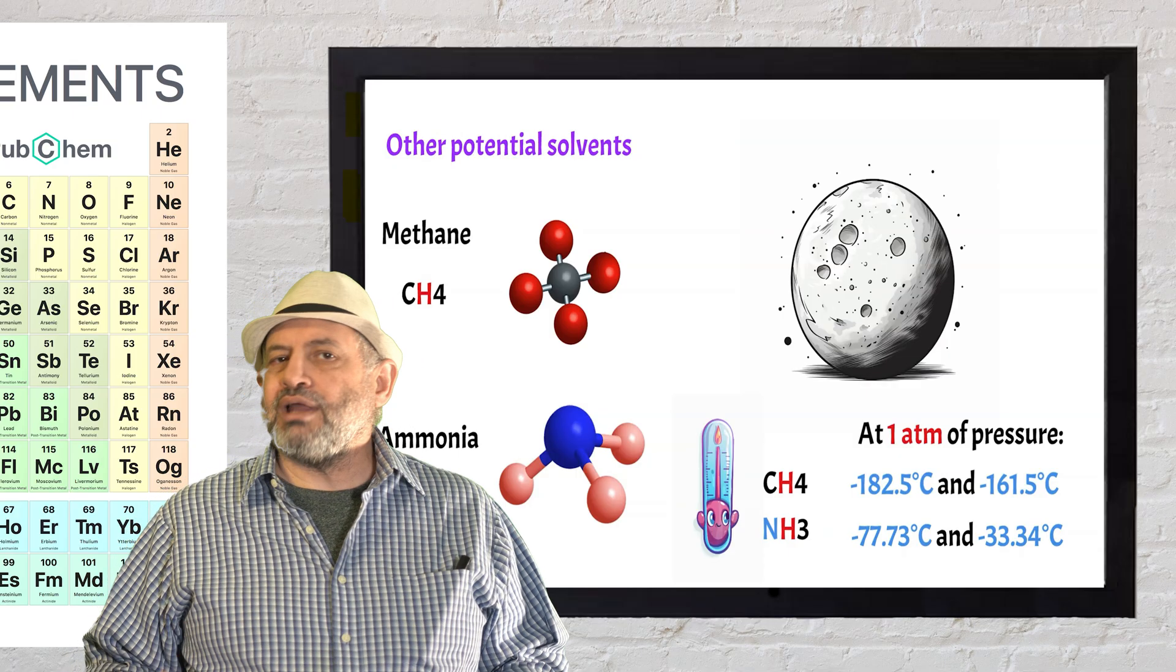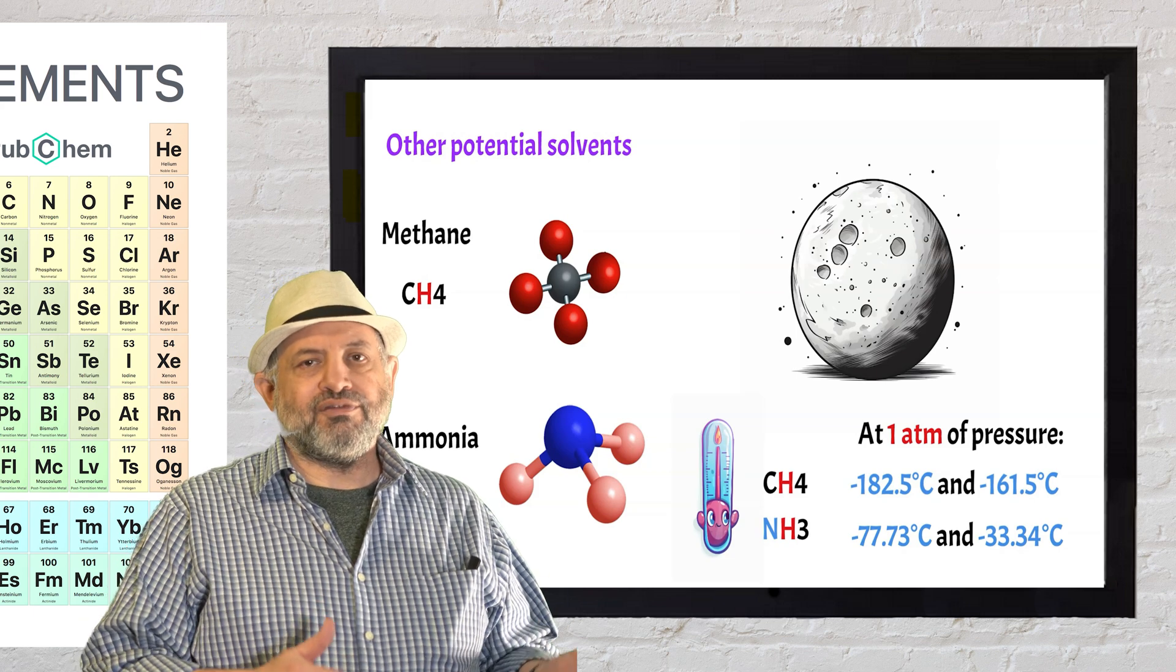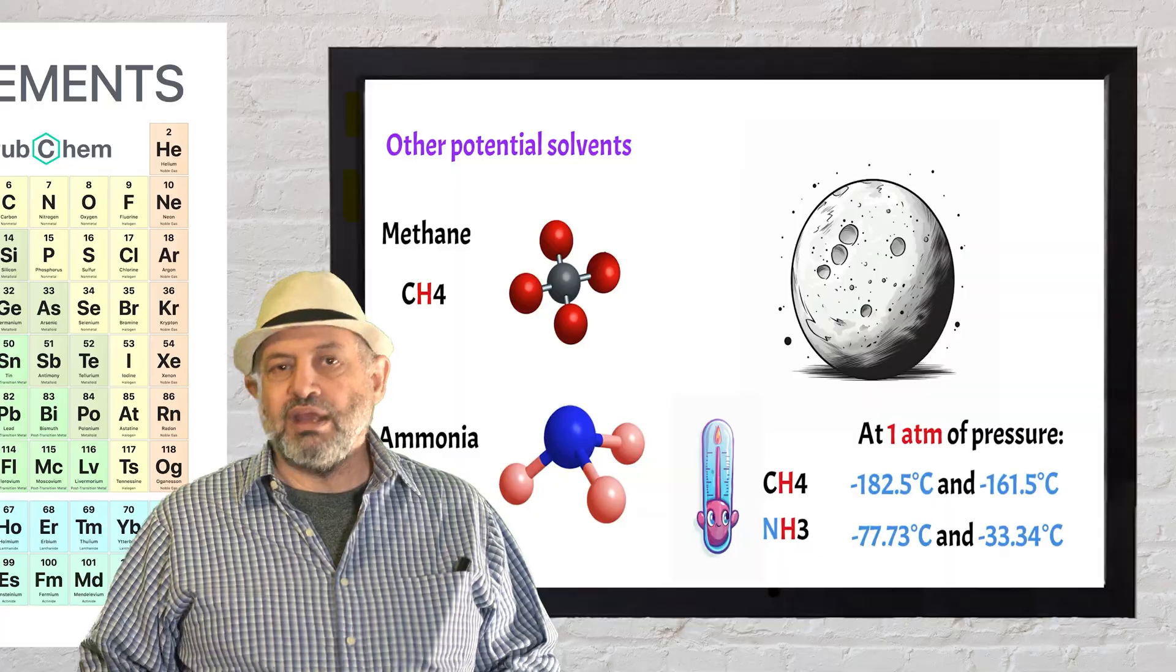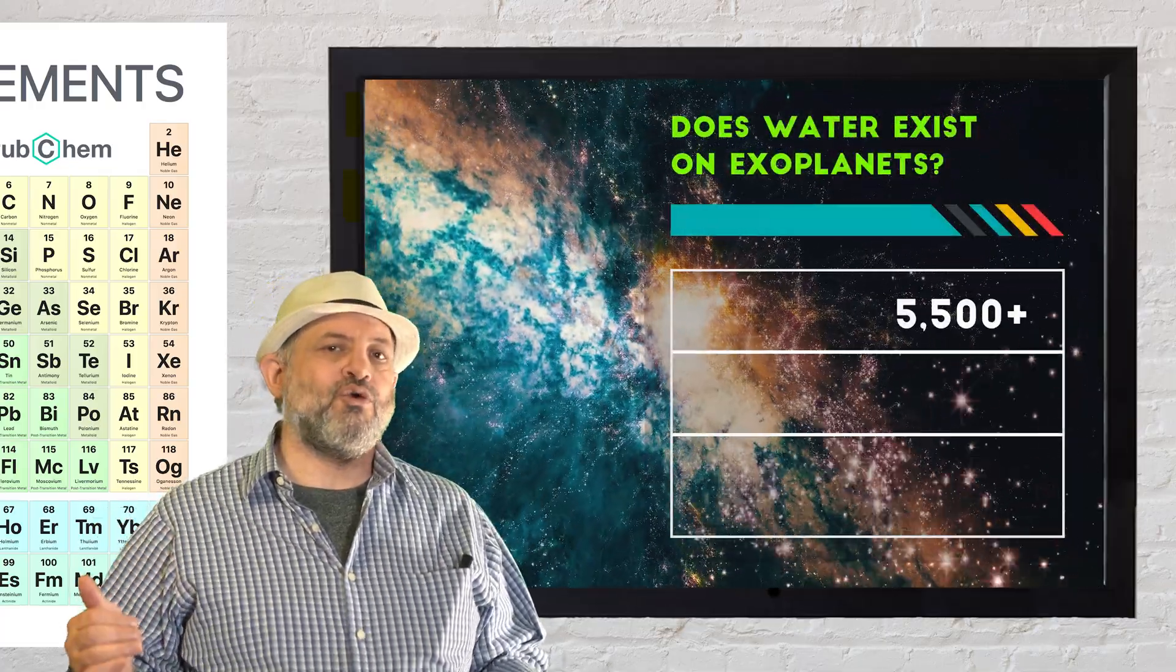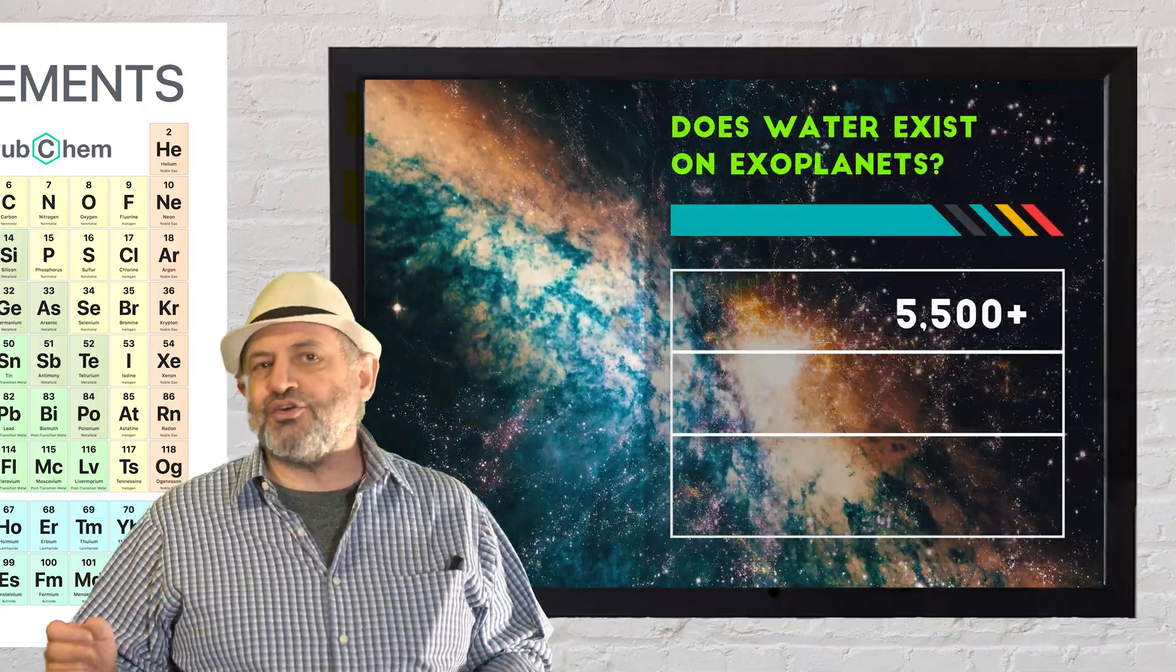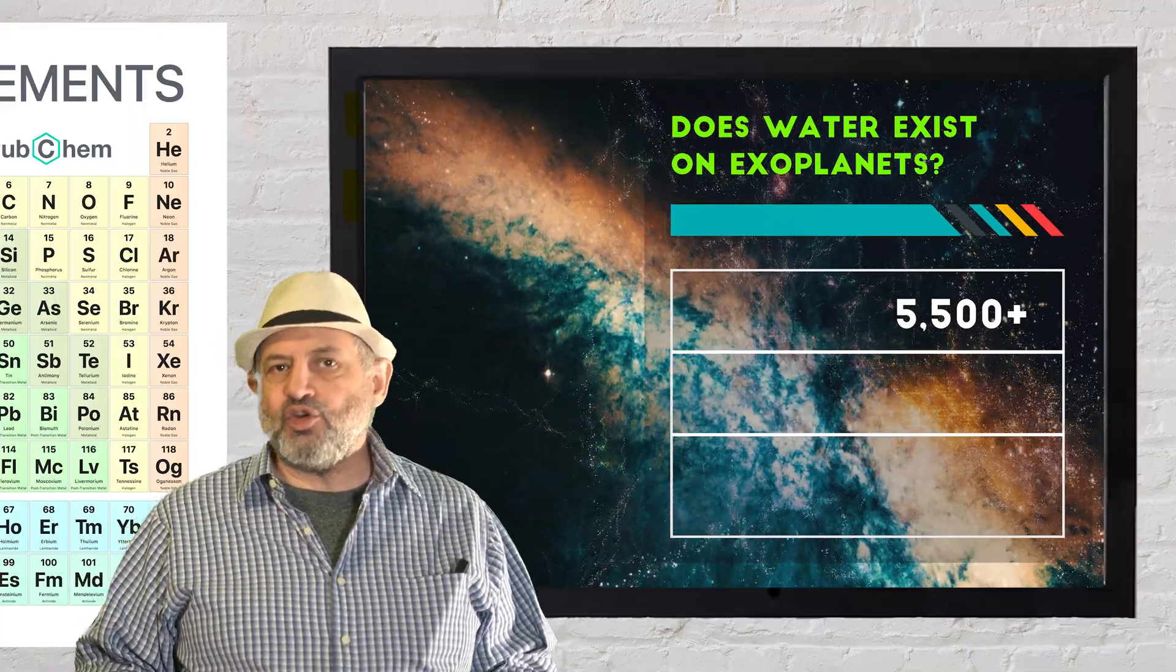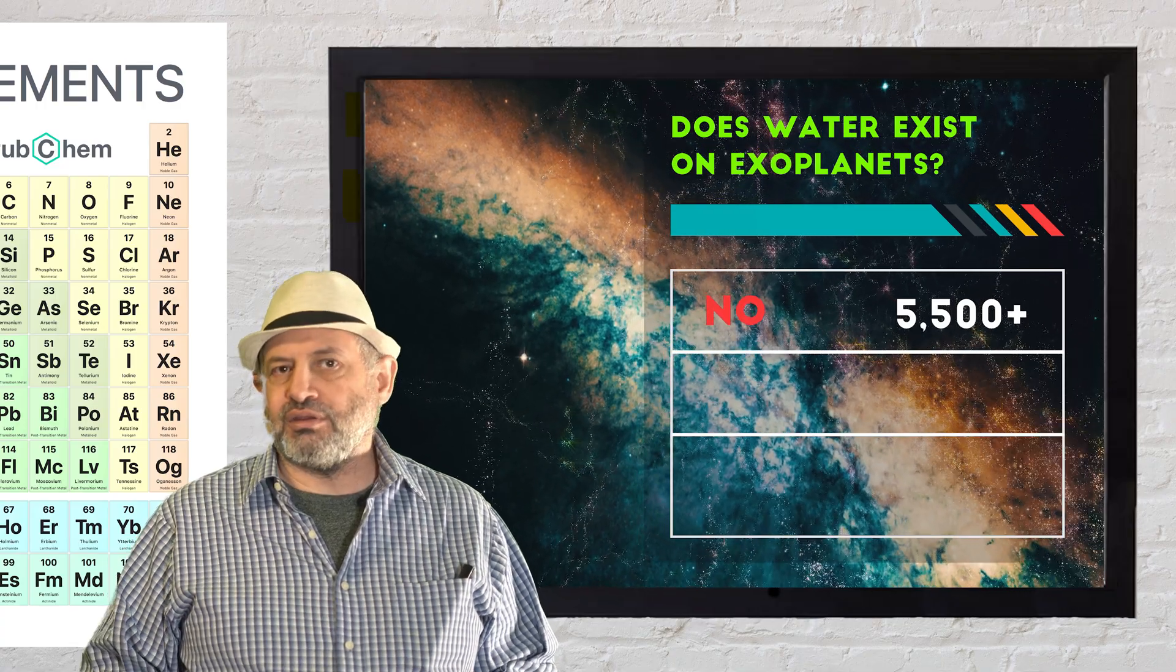On Earth, all life requires water. And if life exists on other planets, that is probably true there as well. In fact, as of February 2024, over 5,500 exoplanets have been discovered in our Milky Way galaxy. Yet, so far, no planets have been confirmed to contain water.